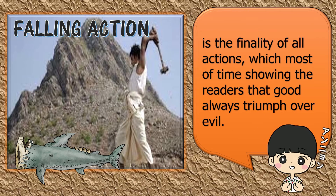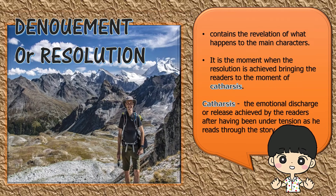We are now at the finality of all actions, which most of the time shows the readers that good always triumphs over evil. This is falling action. Of course, every story has its end. Let us now proceed to the final part of Freytag's Pyramid.